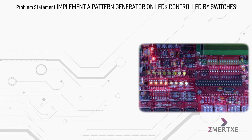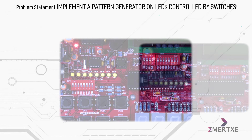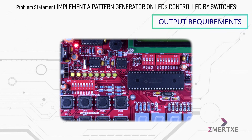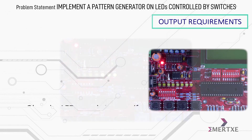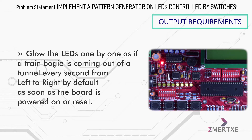The direction of the flow should be changed by a key press. Now coming to the output requirements, you can see 8 LEDs on the board. The LEDs have to glow one by one as if a train bogey is coming out of a tunnel every second from left to right by default, as soon as the board is powered on or reset.